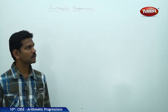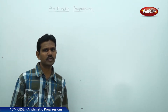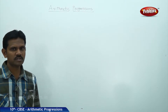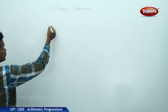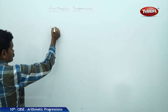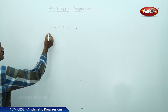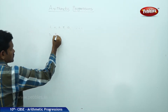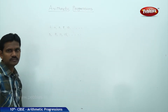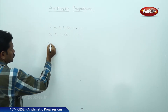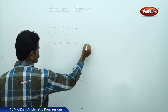Today we are discussing the chapter on arithmetic progressions, starting from the very beginning — what is meant by a progression and what are the different types. A progression can be seen in sequences like two, four, six, eight, ten and so on; three, seven, eleven, fifteen and so on; and two, four, eight, sixteen, thirty-two and so on.